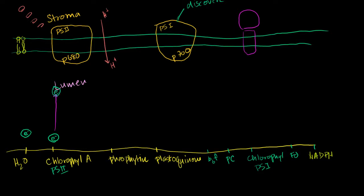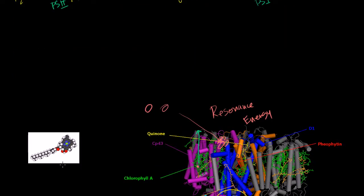So the electron here is in a high energy state. When it goes to the high energy state, it actually shows up in pheophytin — that is the primary electron acceptor. And it's actually a chlorophyll A molecule. Let me show you what a chlorophyll A molecule looks like.